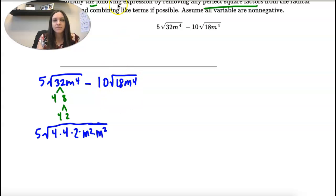Then we're going to do the same thing here. So, minus 10. And then 18 is 9 times 2. And 9 is a perfect square. So, 9 times 2. And n squared, n squared.